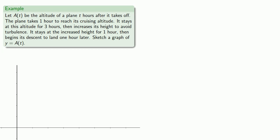Or we might have more detailed information. Let a of t be the altitude of a plane t hours after it takes off. The plane takes one hour to reach its cruising altitude, stays at this altitude for three hours, then increases its height to avoid turbulence. It stays at the increased height for one hour, then begins its descent to land one hour later. Let's sketch a graph of y equals a of t.